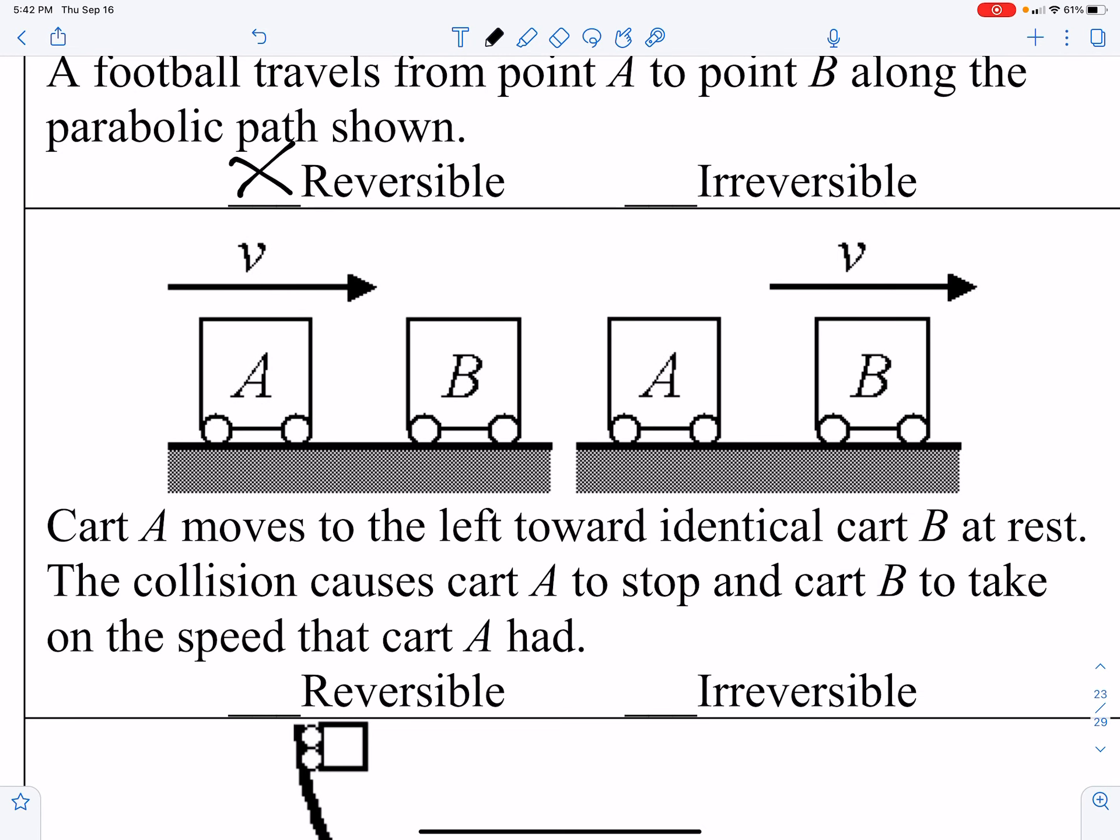Now, if cart A were to hit cart B at rest, and then A now comes to rest and B goes, could this be reversible? Well, yes, if B went to the left and hit A, then B would be at rest and A would move. That's a very reversible process.